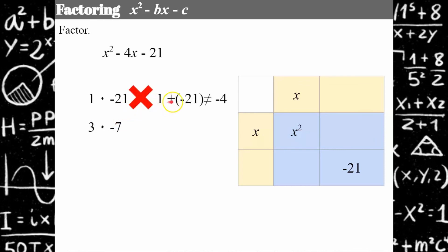3 times negative 7 and I'm done. Let's check my sums. 1 plus negative 21 is not negative 4. However, 3 plus negative 7 is negative 4. Fill in our table, positive 3, negative 7, and my like terms have a sum of negative 4. So factored, I have x minus 7 multiplied by x plus 3.